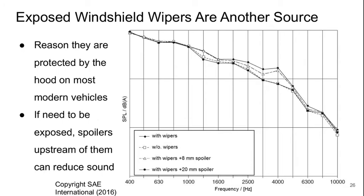Exposed windshield wipers, if not hidden away when not in use, are another sound source. This is actually the reason they're protected by the hood on most modern vehicles. With the wipers present, especially in the upper frequency range, there are significant increases in noise. Removing the wipers brings the noise down a bit. Adding spoilers — essentially the covers seen on modern vehicles — when large enough, brings the sound level down significantly.